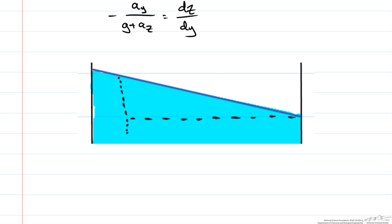What does this mean? It means if we look at the free surface when this container is accelerated with some constant acceleration in the y direction, the slope of that line is just going to be the acceleration in the y direction over gravity plus az. So if there is no acceleration in the vertical direction then it is just the acceleration in the y direction over g.